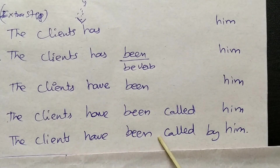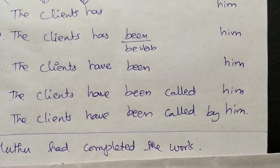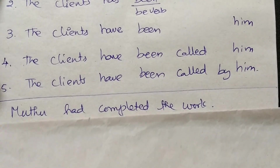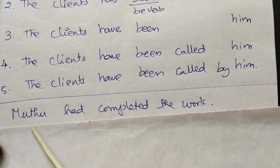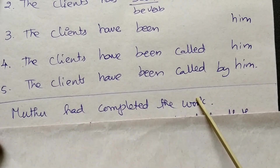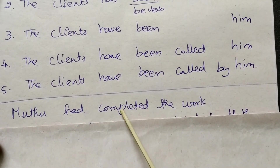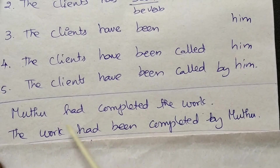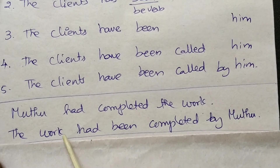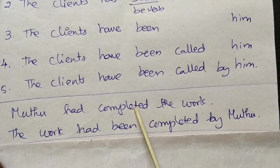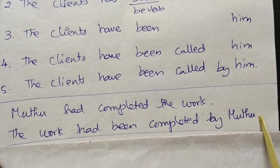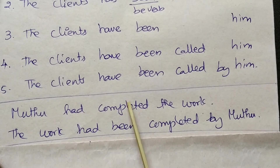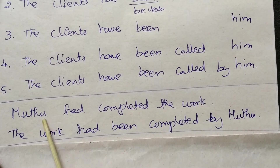Now moving on to past perfect tense. In past perfect, 'has' changes to 'had.' So the structure becomes: 'The work had been completed by Muthu.' 'Had completed the work' becomes 'had been completed by.'